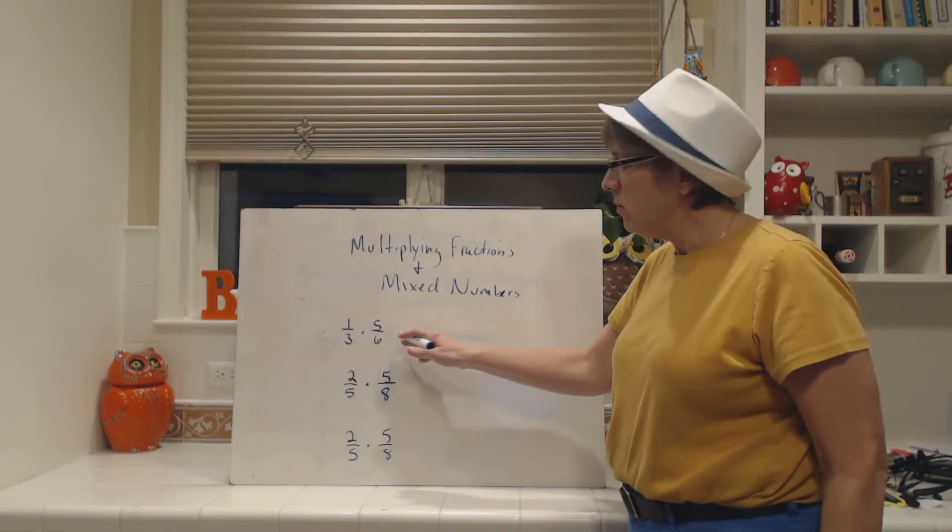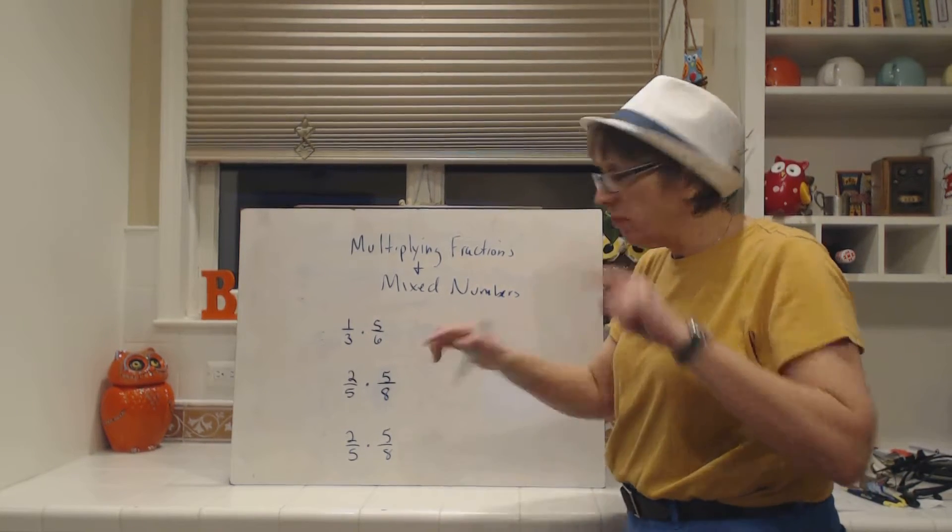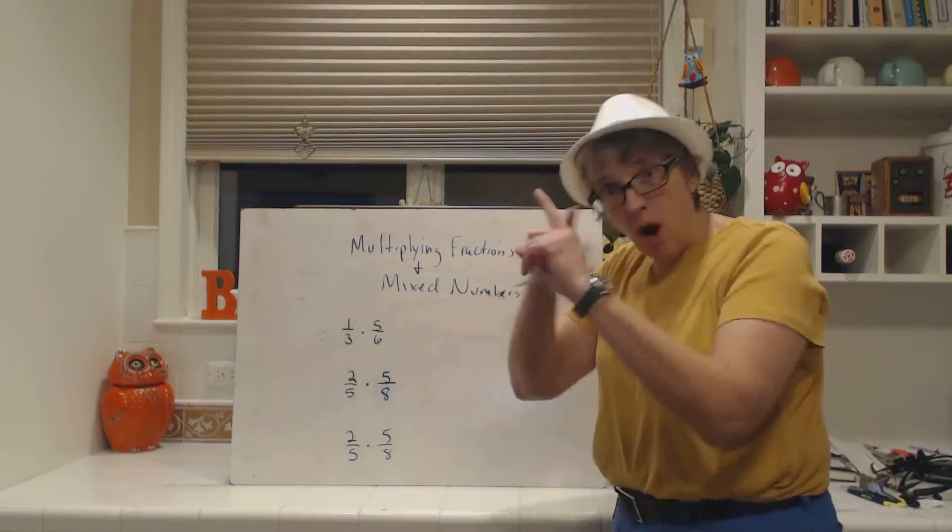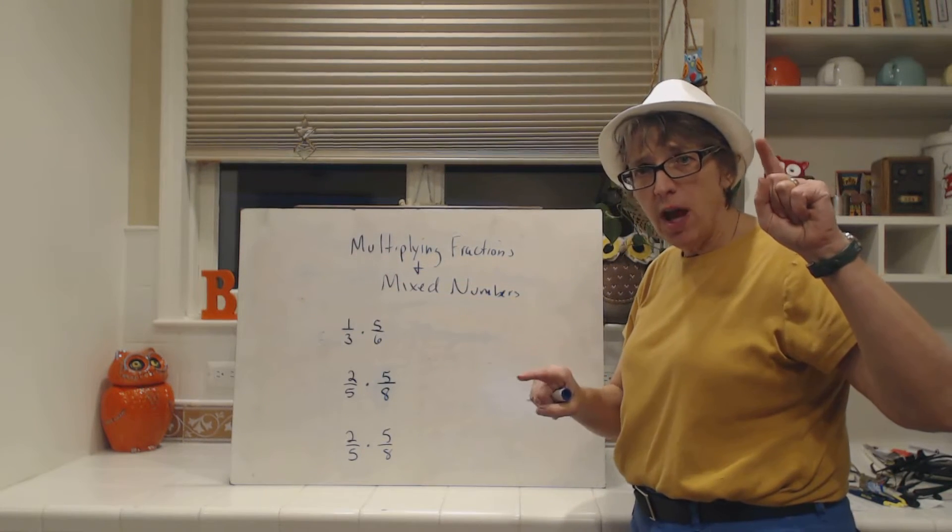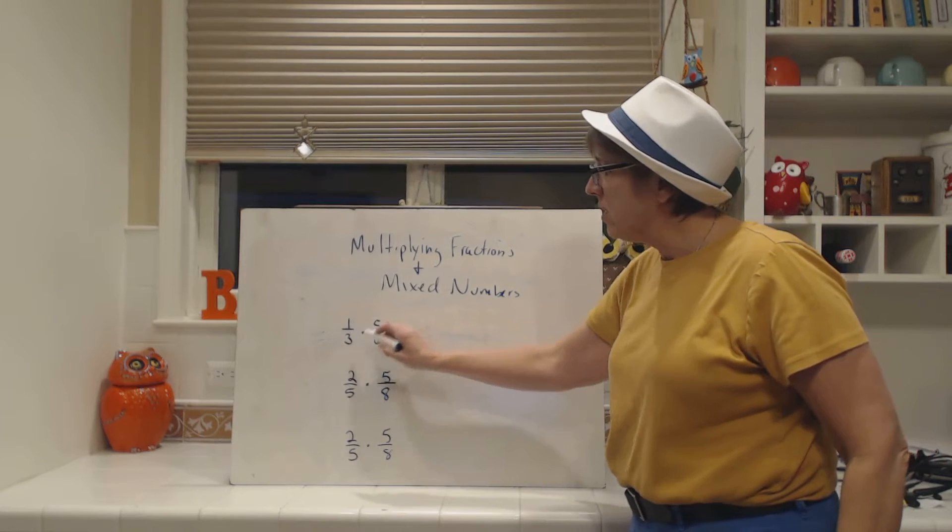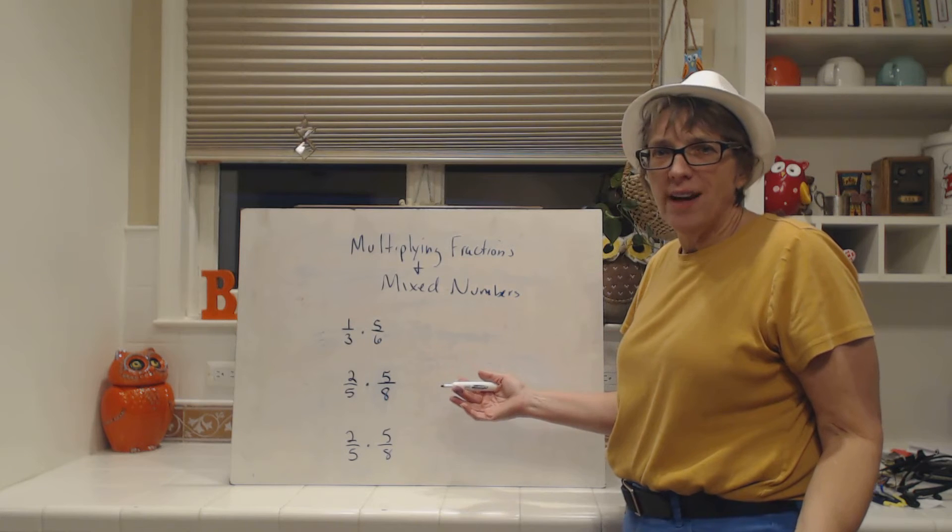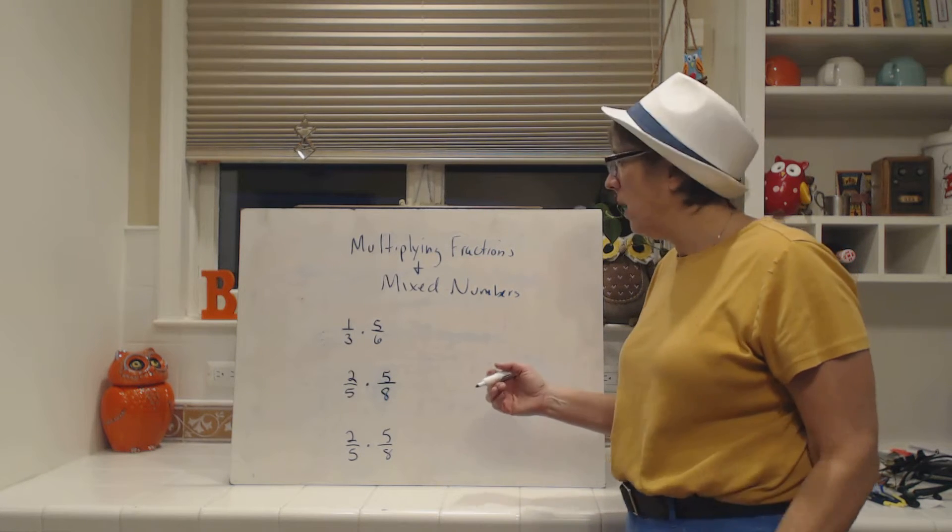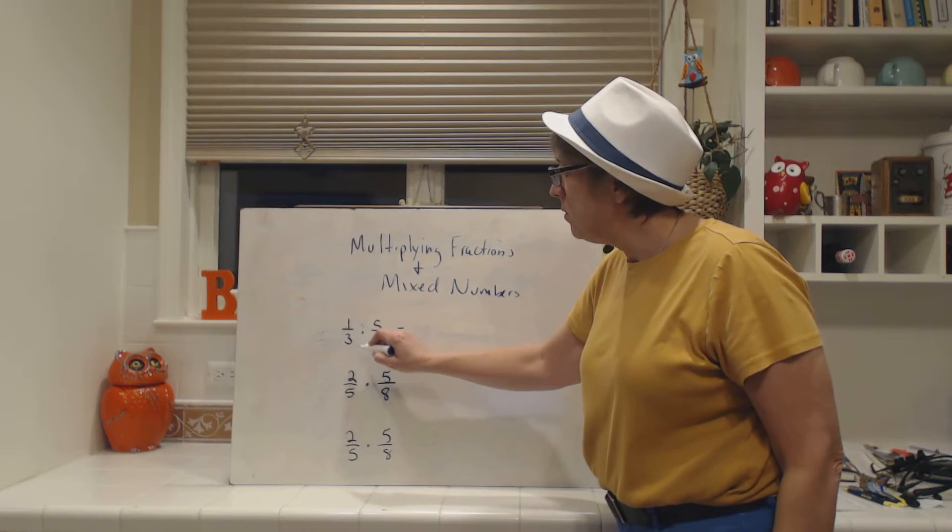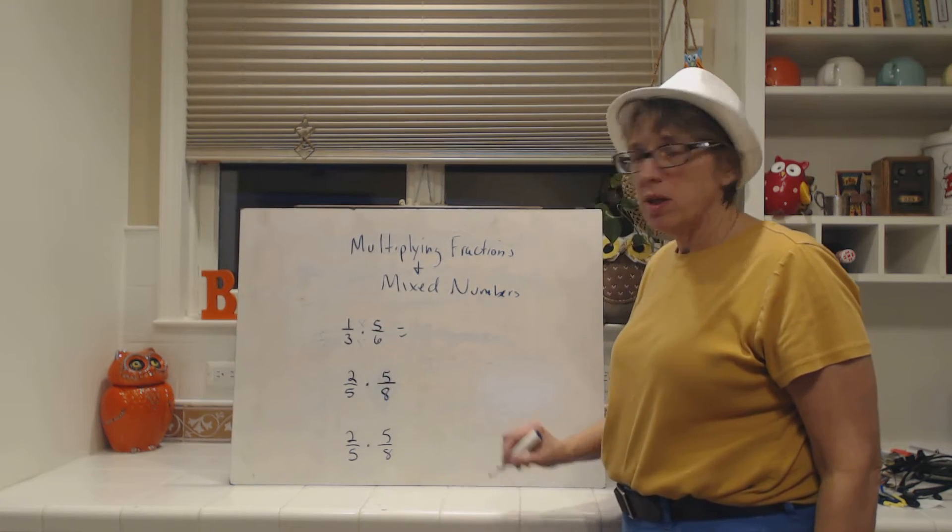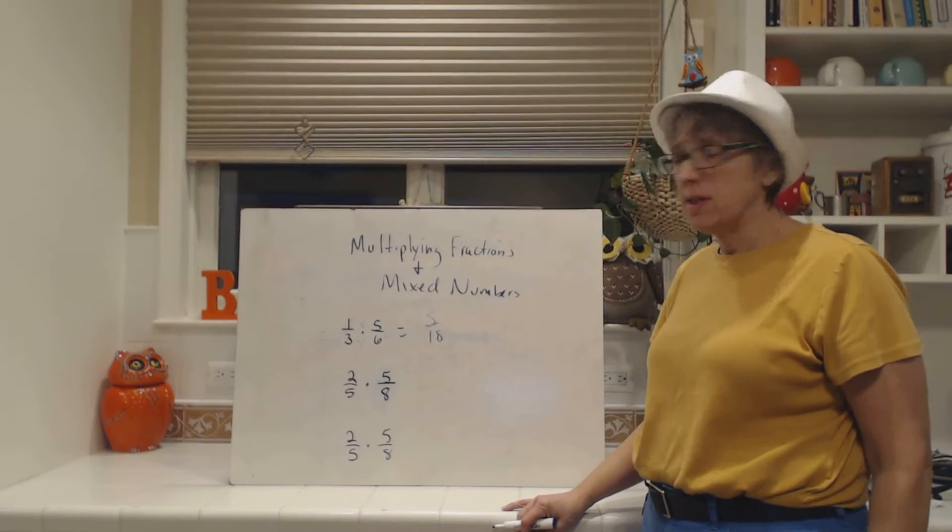It's just a quick review. If we have 1/3 times 5/6, there's nothing we can cross-cancel here. When we cross-cancel, we're comparing like a cross. Think about the one and the six, the opposite numerator to the opposite denominator, and vice versa, the denominator to the opposite numerator. They have no factors in common. That's where the greatest common factor comes into play. When we don't have it, we simply go numerator times numerator and denominator times denominator. 5/18, because 5 times 1 is 5 and 3 times 6 is 18.